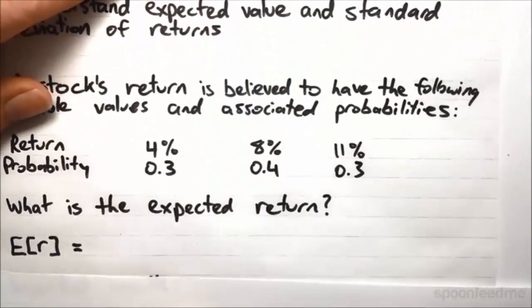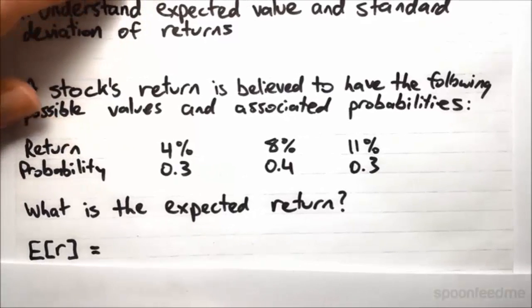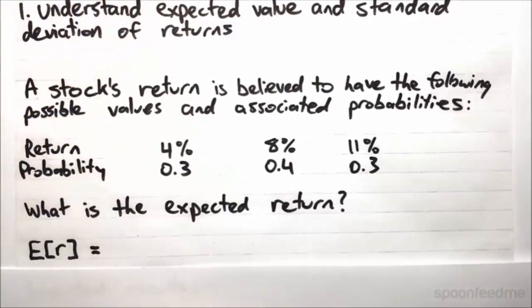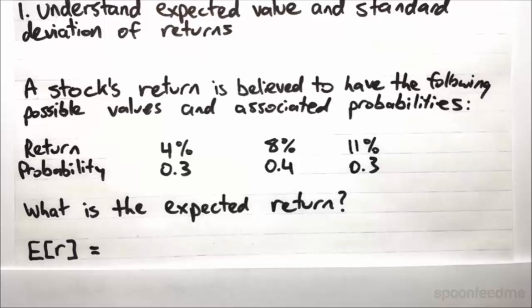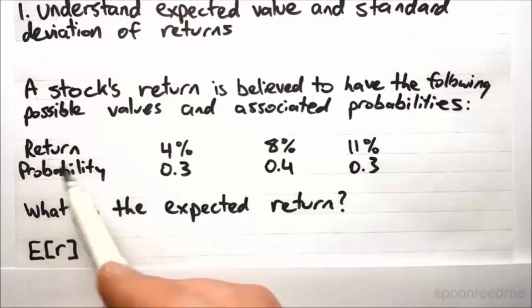So we start off with measuring the return, which we do with the expected value. So if you're not familiar with it already, it's really simple. We basically assume that there are a range of possible returns that the asset could have, and each of those possible returns has a corresponding probability. And so we just say that the expected return is the weighted sum of the possible returns multiplied by their probabilities. So if we have a look at this example here,